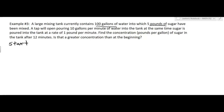Over time, the number of gallons of water and the number of pounds of sugar is going to change. Find the concentration — pounds per gallon — of sugar in the tank after 12 minutes. And is that a greater concentration than at the beginning?